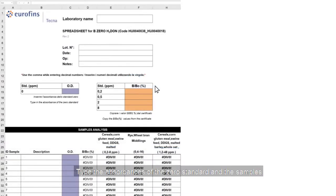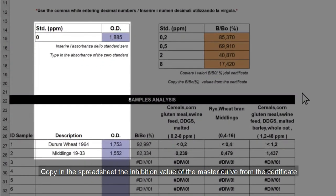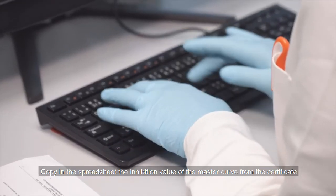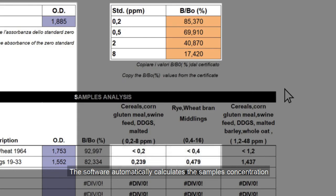Type the absorbances of the zero standard and the samples. Copy in the spreadsheet the inhibition value of the master curve from the certificate. The software automatically calculates the sample's concentration.